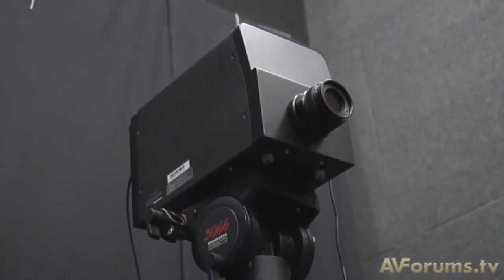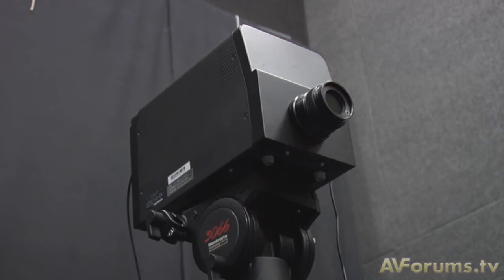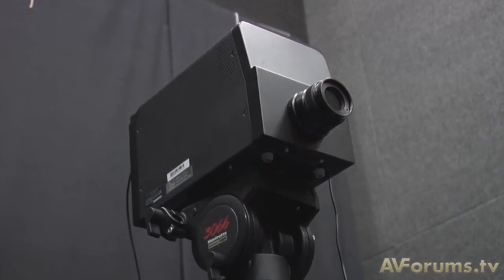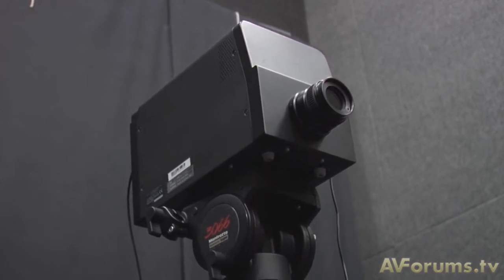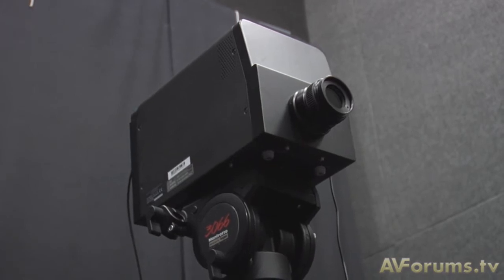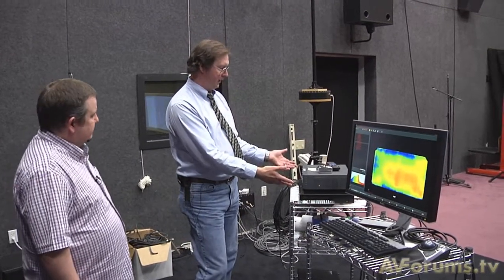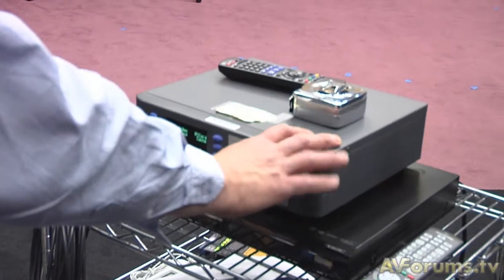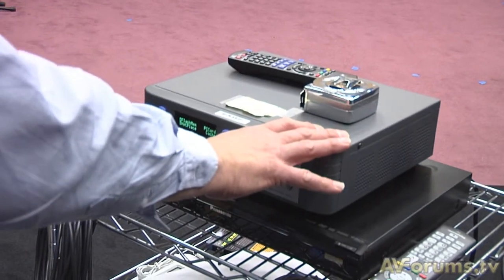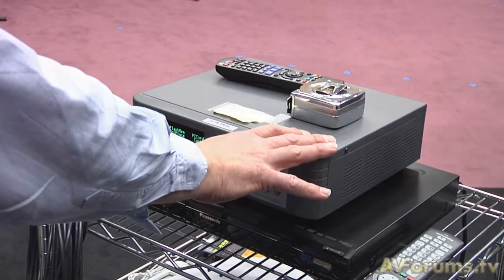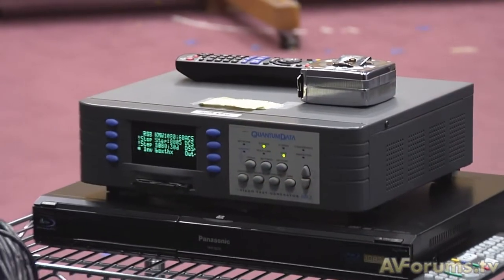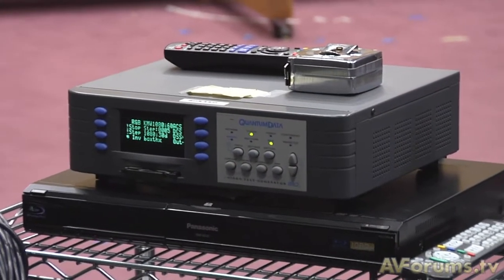Maybe you could take our viewers through some of the test procedures that you would go through. Okay, we have the spectroradiometer that measures the lighting color of the image. We have a video generator that is capable of doing RGB and YCbCr and analog outputs at up to 1080p 60 and all the frame rates in between.